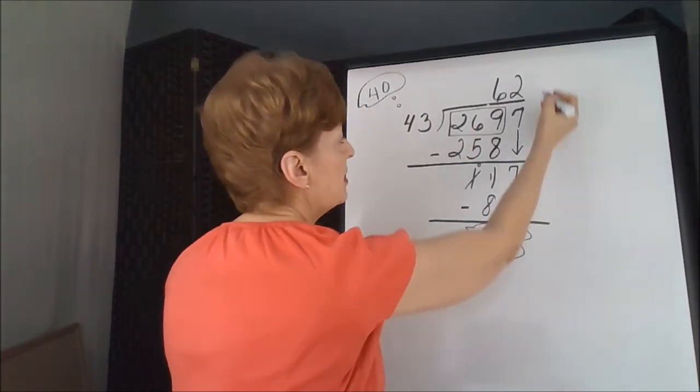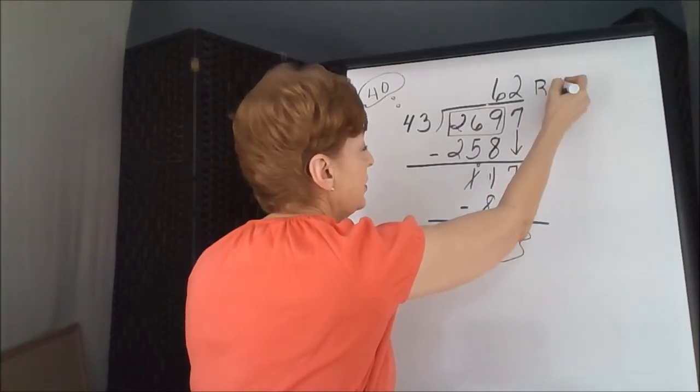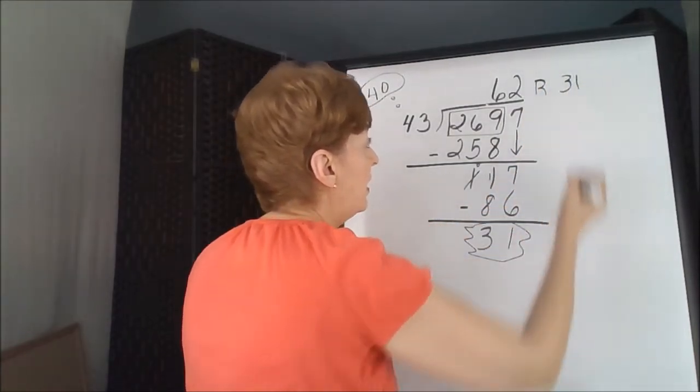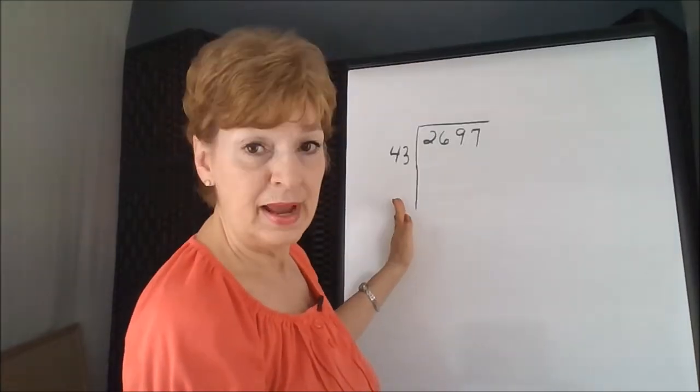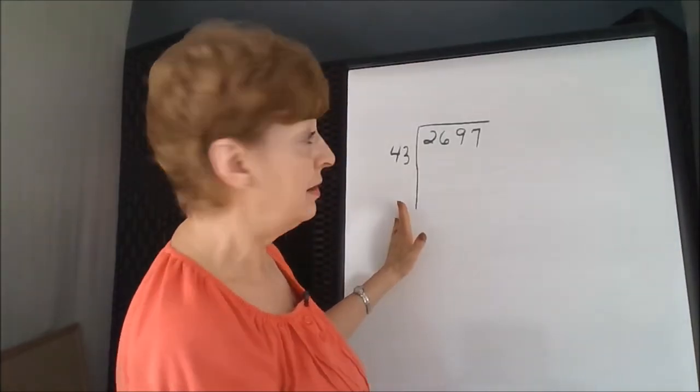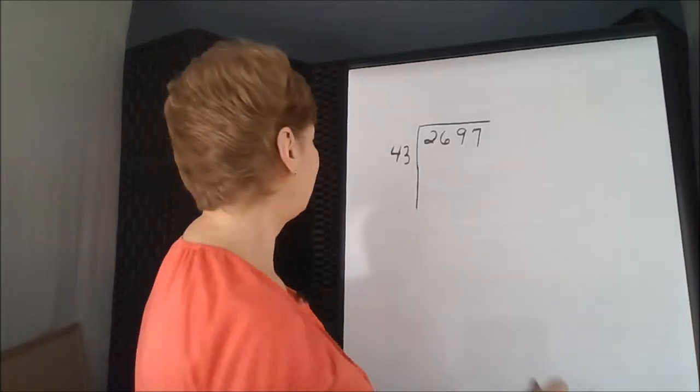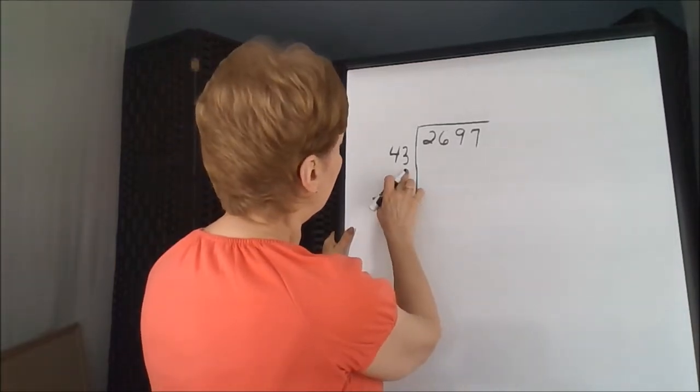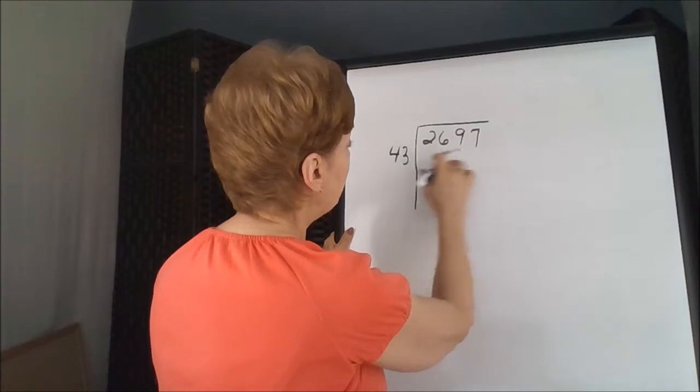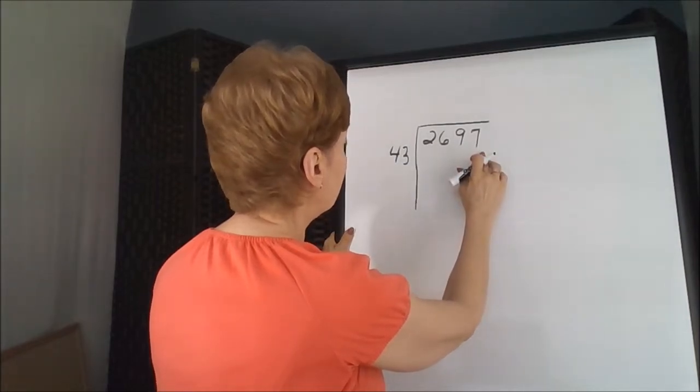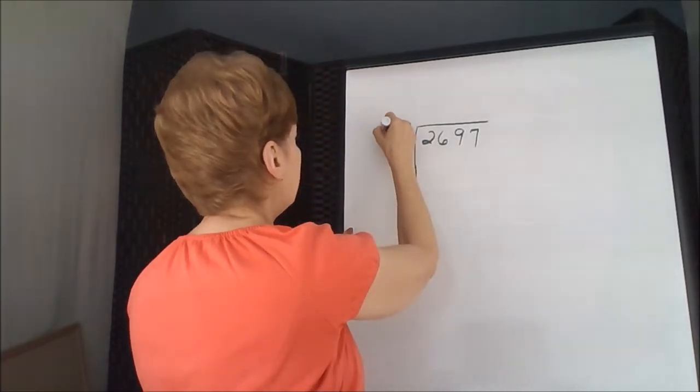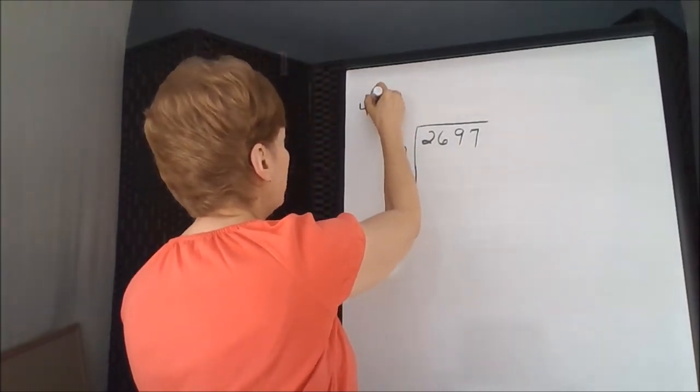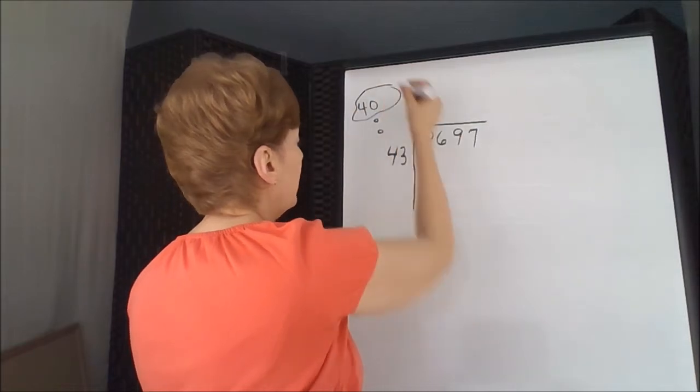So our answer to this problem is 62 remainder 31, and that's done with the traditional division algorithm. The area box method is as follows. All of the dividend is placed in the box, 43 is outside, the divisor is outside.